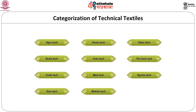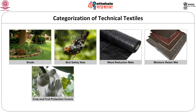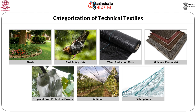We shall see each textile's definition one by one. The first one is agro-textiles. This term describes textile materials used in the area of farming, gardening, fish-rearing, landscaping, indoor plant cultivation and forestry. This has been represented by a string of wheat. Examples of agro-techs are shades, bird safety nets, weed reduction mats, moisture retaining mats, and fruit protective covers. We have two pictures of anti-hail nets and fishing nets shown.